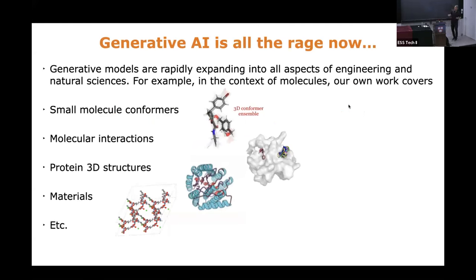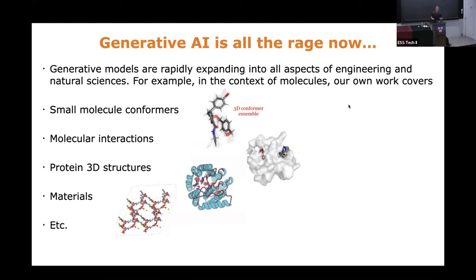Today, generative AI is all the rage — totally exploding. It's nearly impossible to summarize what's going on and all the possible applications people are considering for generative AI. I should qualify that to me, generative models mean probability models. So I'm looking at distributional modeling. Generative AI doesn't need to necessarily be probabilistic, but for the purposes of this talk, it means distributional modeling.